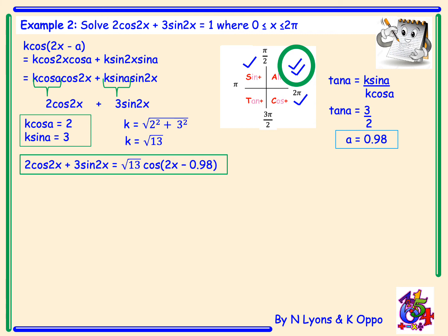So that's us done half of the question. Now that we've got it in wave function form we need to basically equate that to the number 1 and we're going to then solve for x, remembering again we're still working in radians. First thing we need to do is rearrange. So I'm going to take my root 13 over and divide to get cos 2x minus 0.98 equal to 1 over root 13.